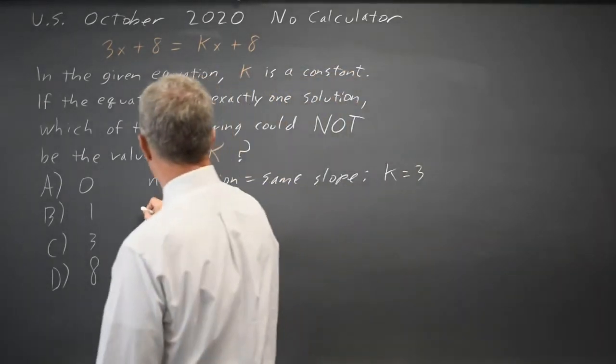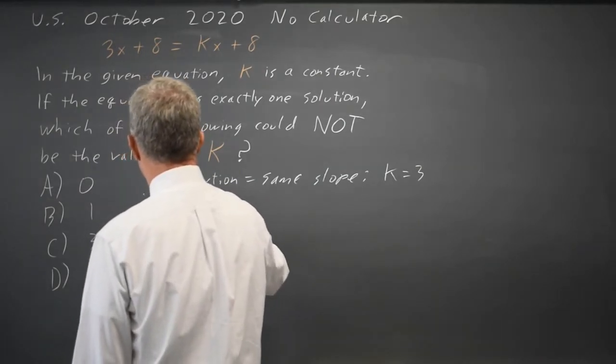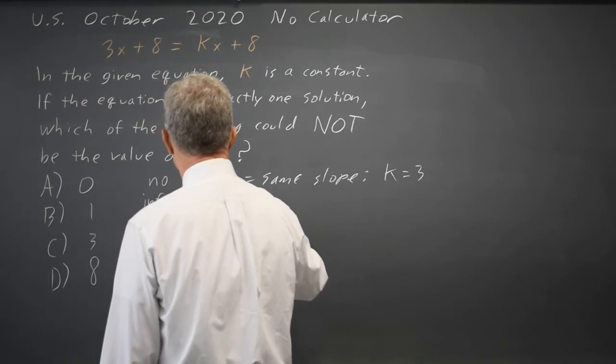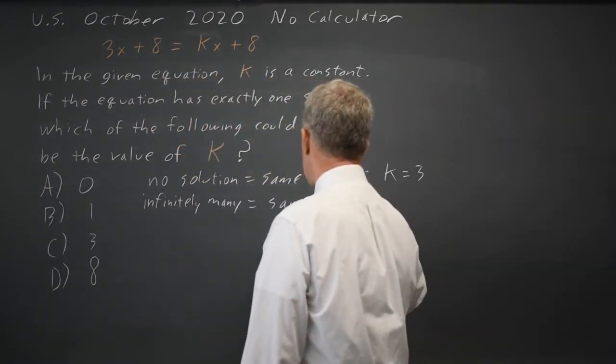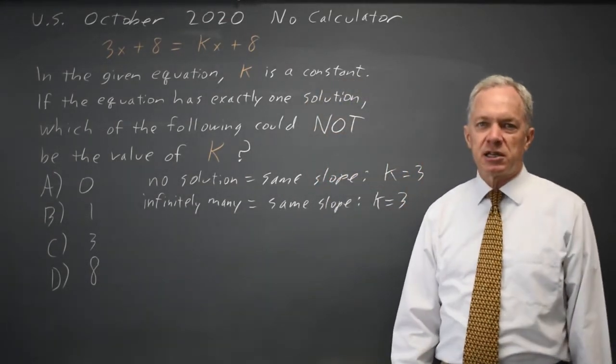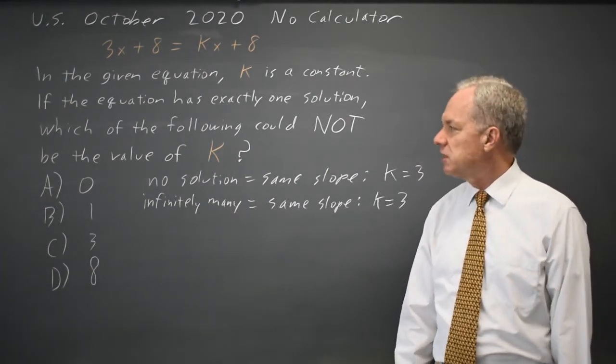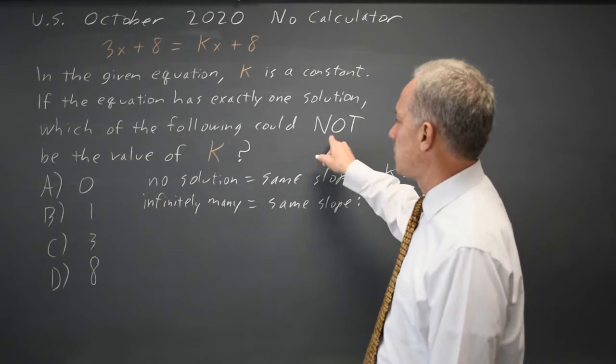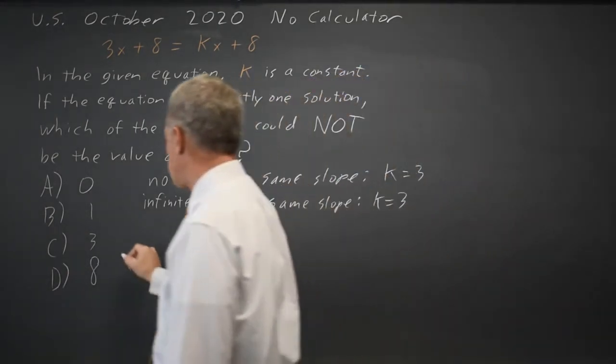Similarly, infinitely many solutions means the same slope, k equals 3. If a linear equation doesn't have no solution or infinitely many solutions, it will have exactly one solution, and so if we do not have exactly one solution, k equals 3, choice C.